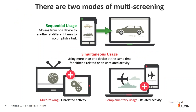Using more than one device is called multi-screening, and there are basically two different ways this works. The first is sequential usage — someone moving from one device to another at different times within the same period to accomplish a specific task, like searching on their smartphone and then ultimately purchasing on their desktop. The other type is simultaneous usage, which falls into two categories: multitasking, meaning working with two devices on an unrelated activity, or complementary usage.